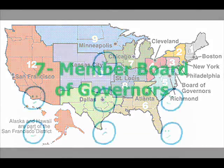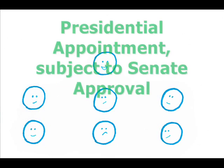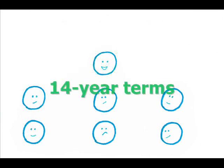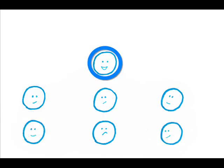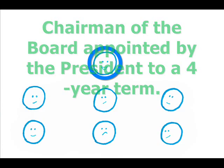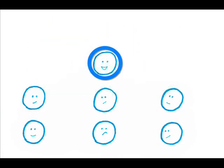There is a seven-member Board of Governors whose members, once appointed by the President and getting Senate approval, serve 14-year terms. The terms are staggered with one appointment every other year, assuring that there is always a wide range of experience on the Board. One member of the Board of Governors is the Chairman of the Board, appointed by the President to a four-year term. Multiple terms can be served.